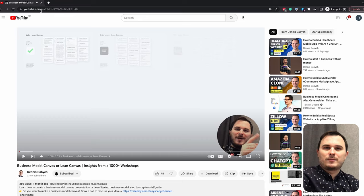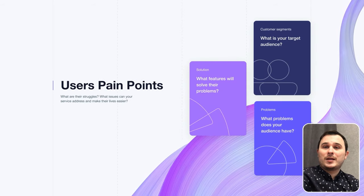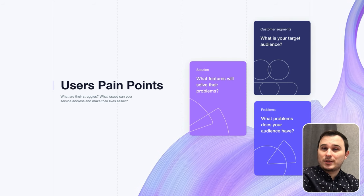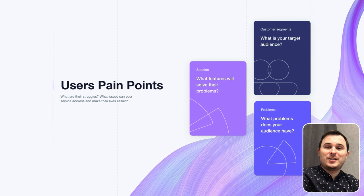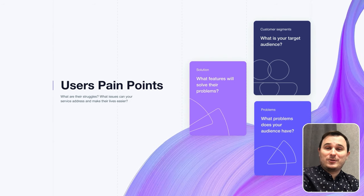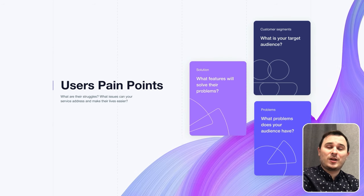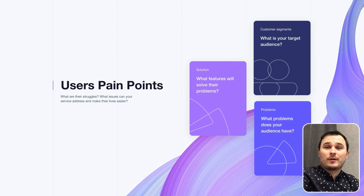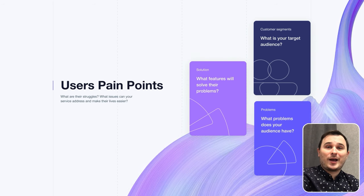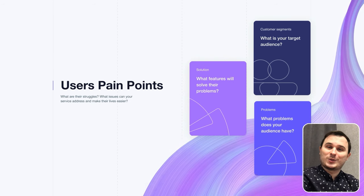It starts with understanding your user groups and their main pain points. What are their struggles? What issues can your service address and make their lives easier? Hidden gem: never put the government as your customers. Your customers can be only businesses or individuals. When you become a big multi-billion company like Microsoft and you have your own lobby in parliament, then you can work with government.